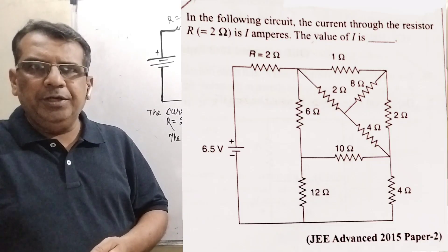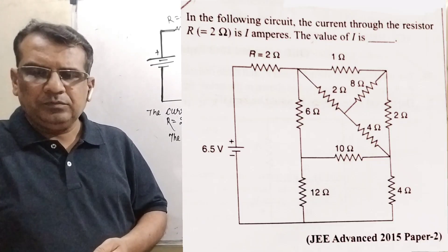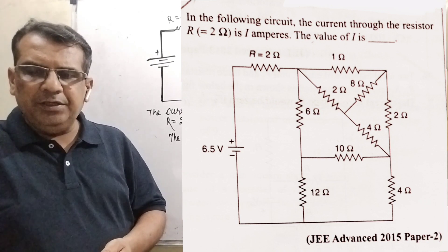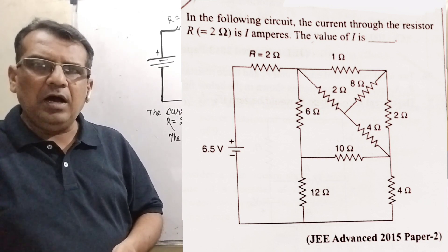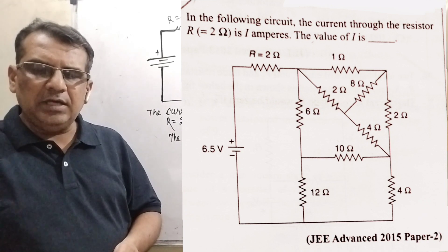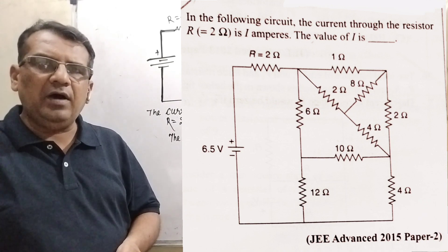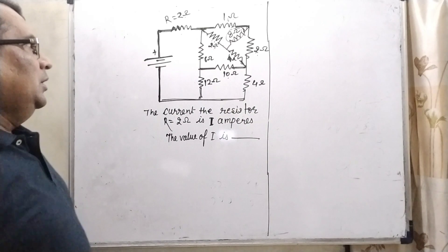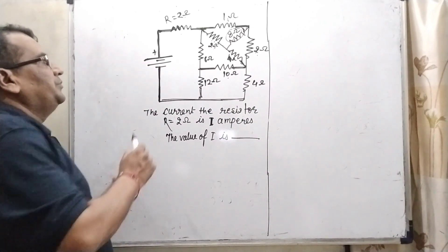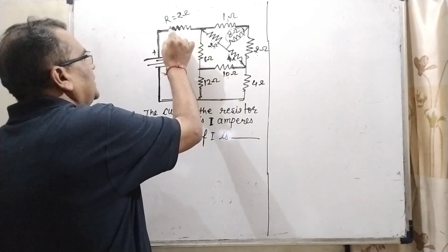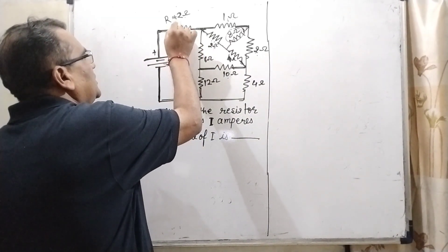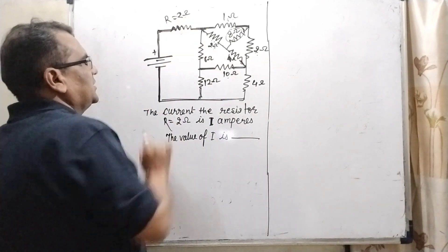The question is: in the following circuit, the current through the resistor R equal to 2 ohm is I amperes — the value of I is? In this question, we have to find out the amount of current passing through this 2 ohm resistor.